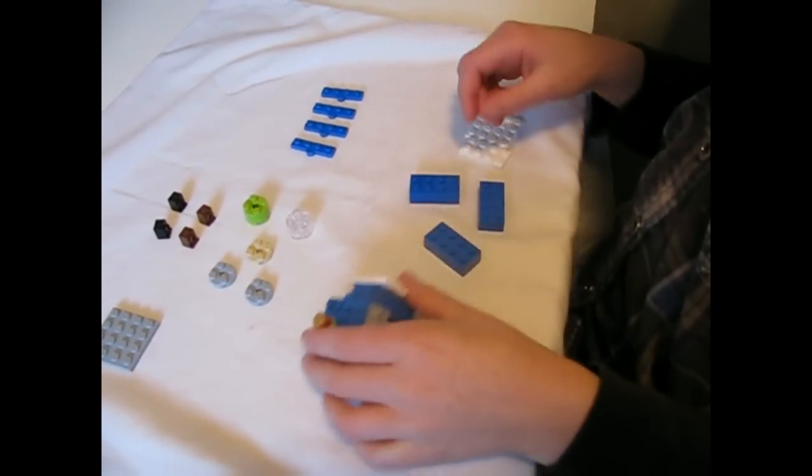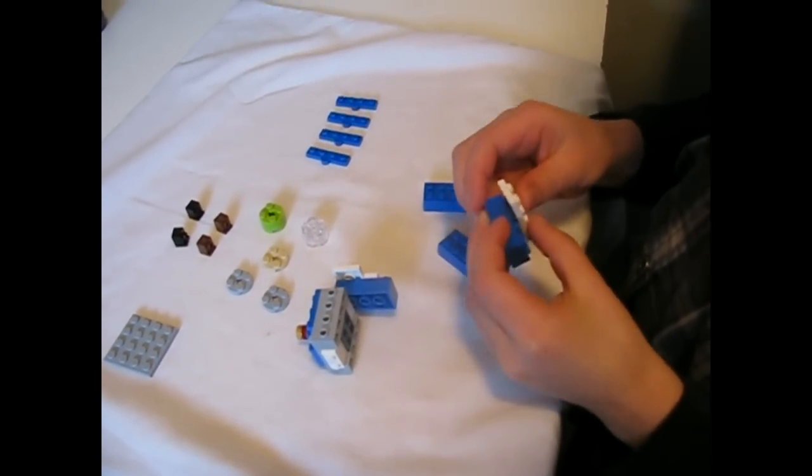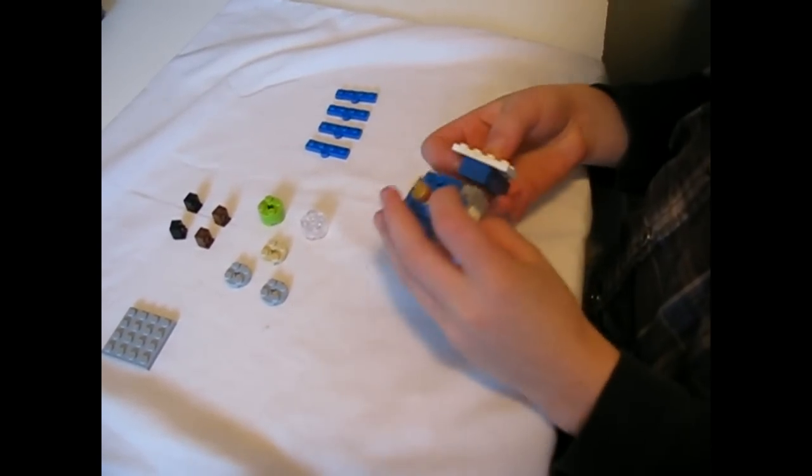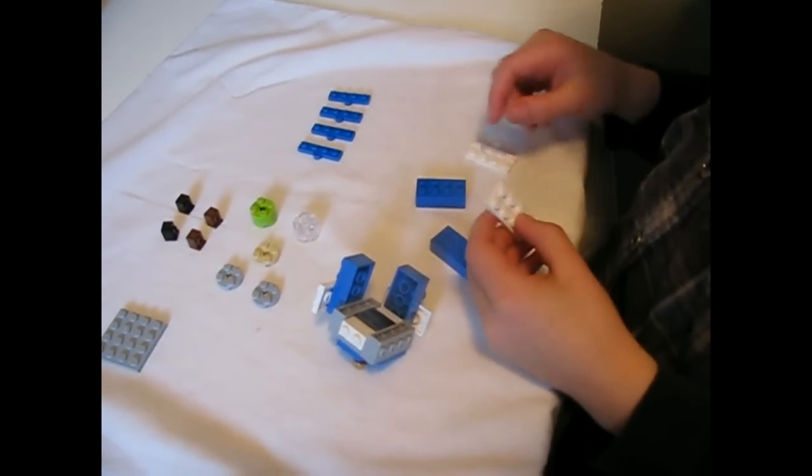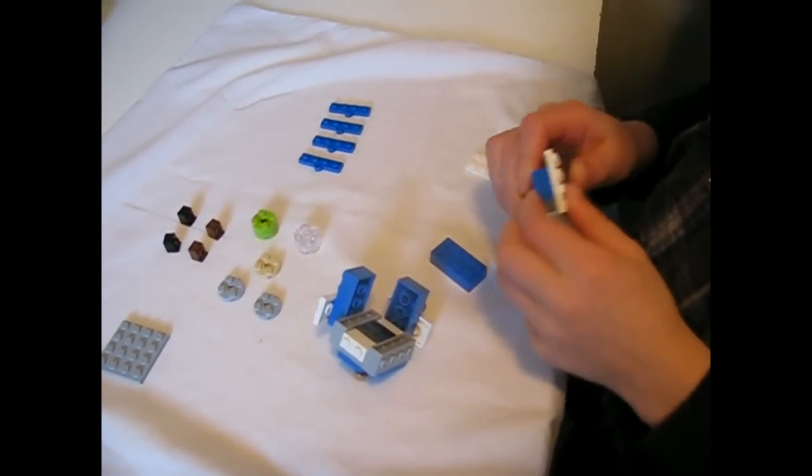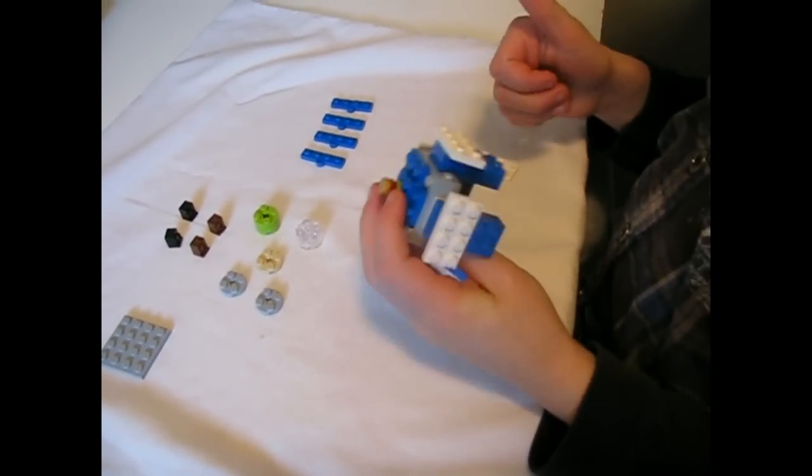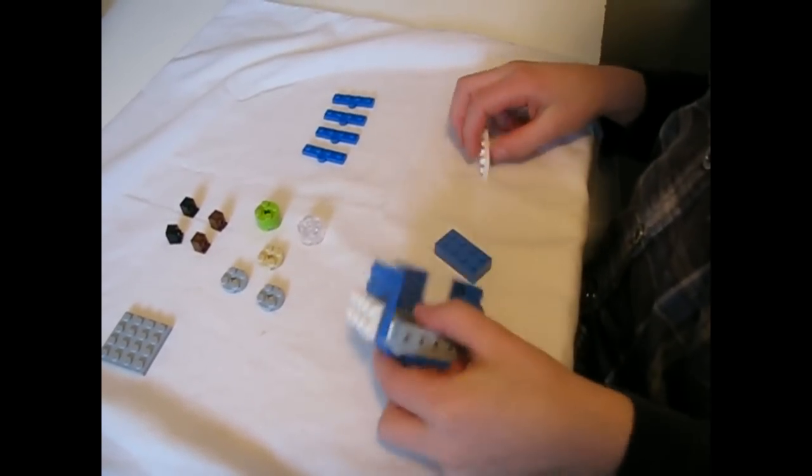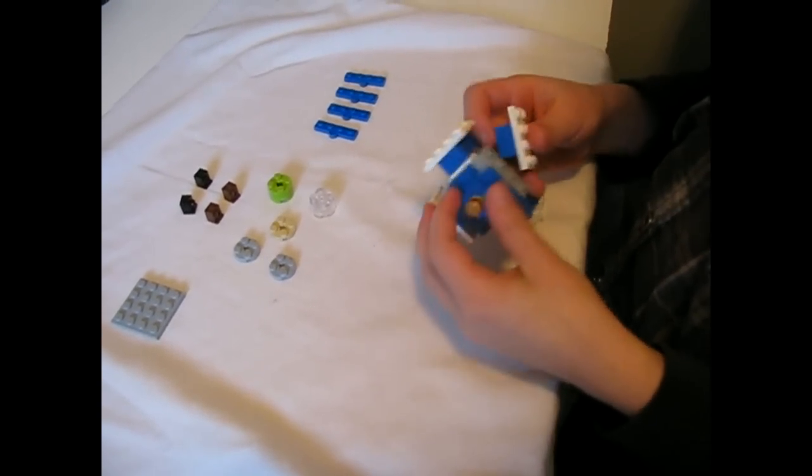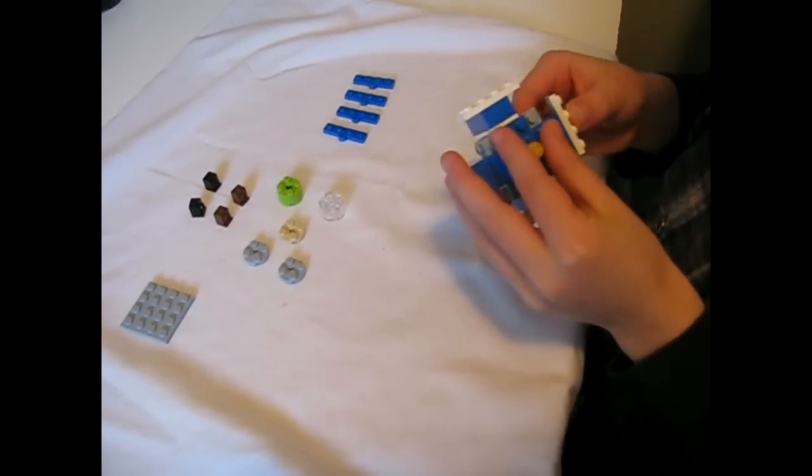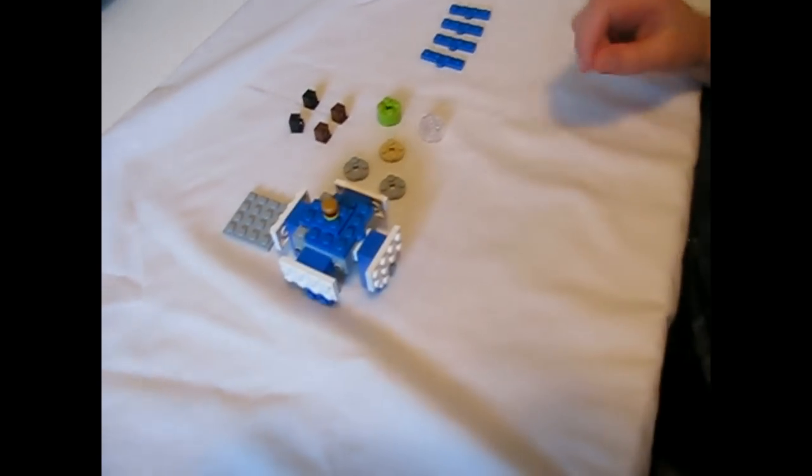And then you get another block and another tile. Stick it there. Then you get another block and another tile. Stick it there, stick together. Get the blue thing right there, the last one. Then stick it right here. There, you got your top and your door.